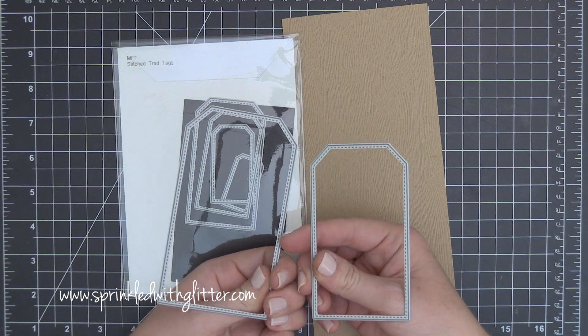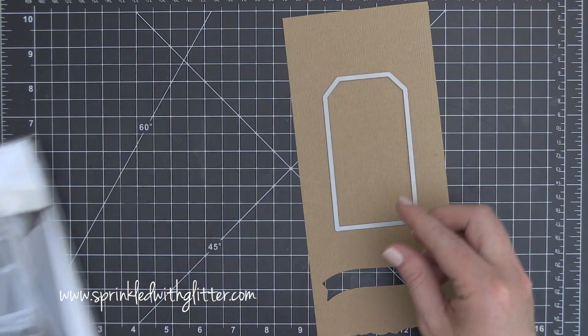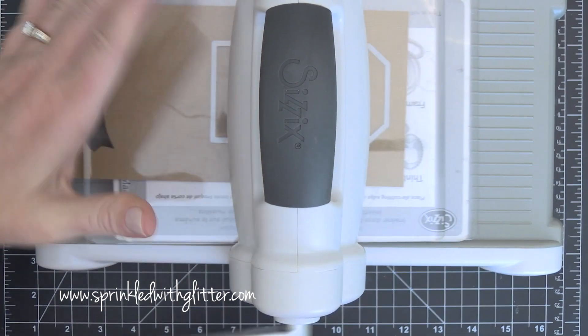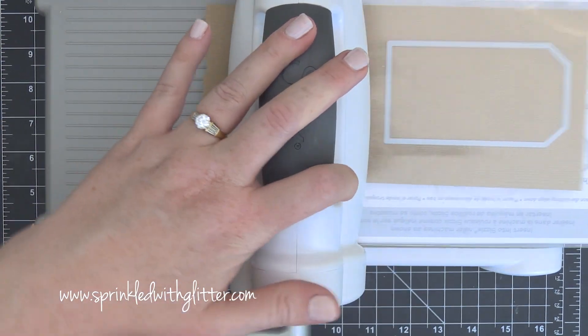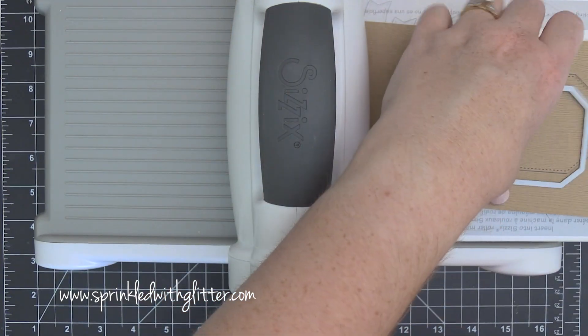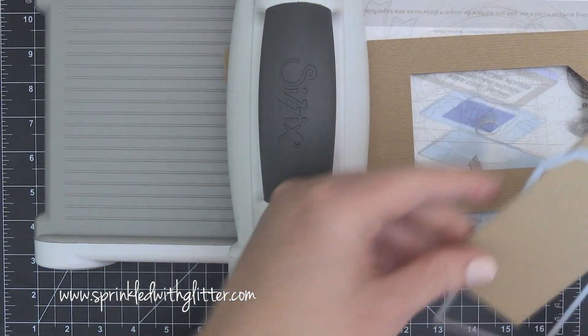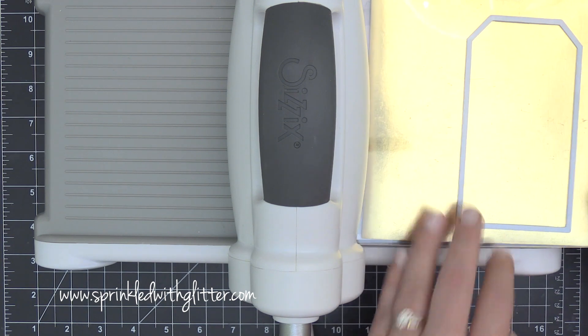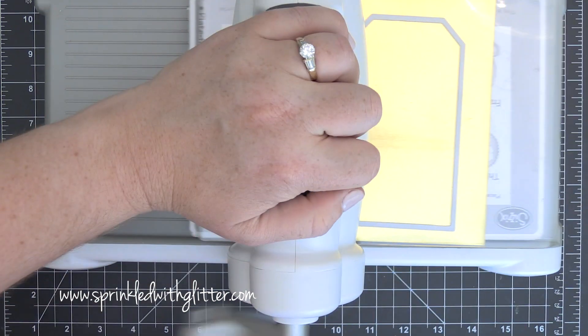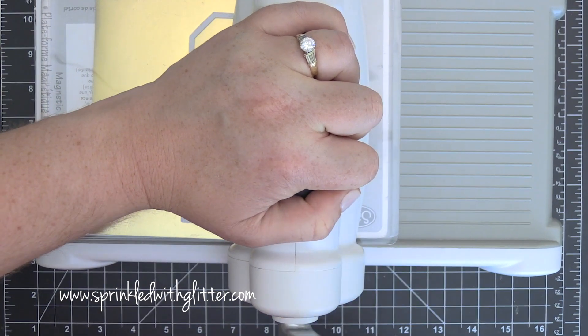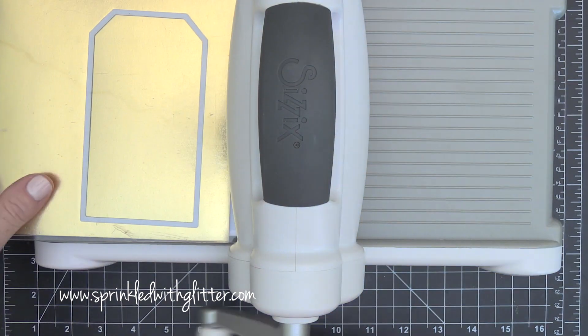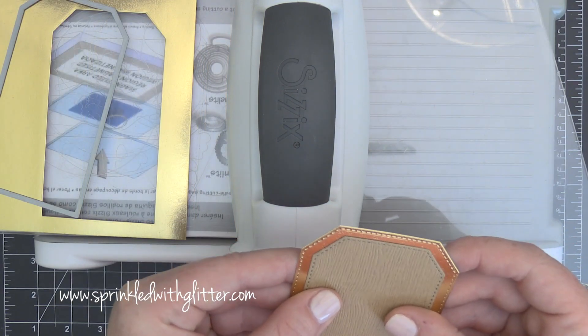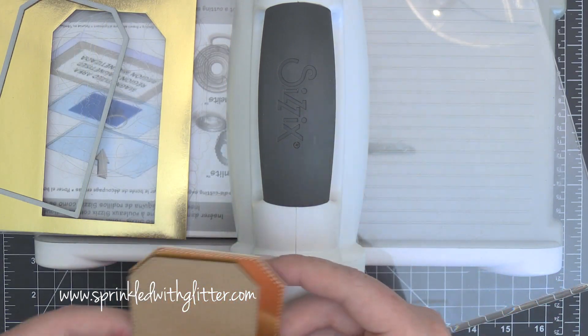So while I allow my watercolor to dry I'm going to go ahead and work on some of the other elements of my tag. I'm using these stitched traditional rectangle tags from My Favorite Things and I'm using the largest and the second to the largest in that set. I'm cutting the smaller of the two dies out of the Essentials by Ellen wood grain embossed craft cardstock and the larger one I'm cutting out of this Tim Holtz metallic cardstock. This has a craft core so it really coordinates nicely with that craft wood grain cardstock.